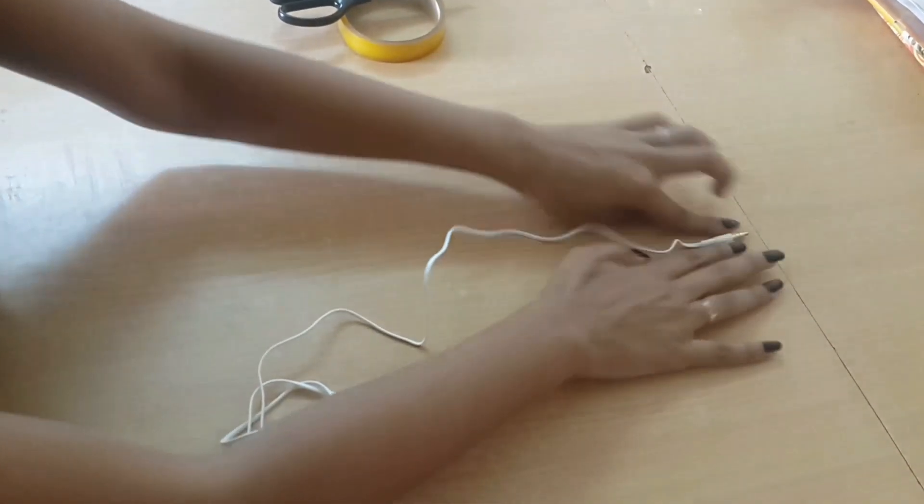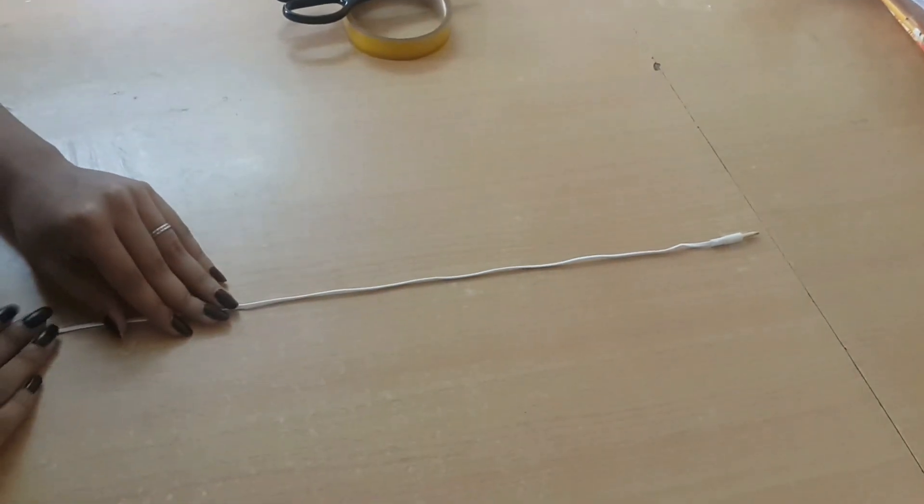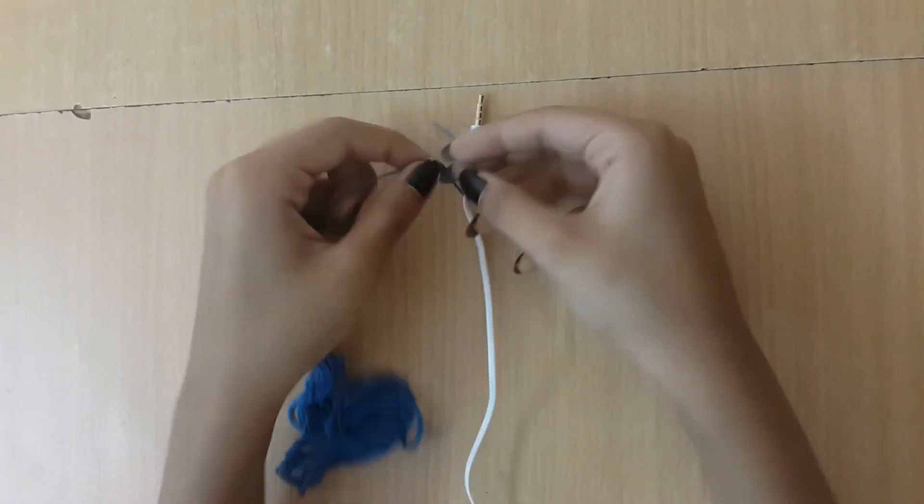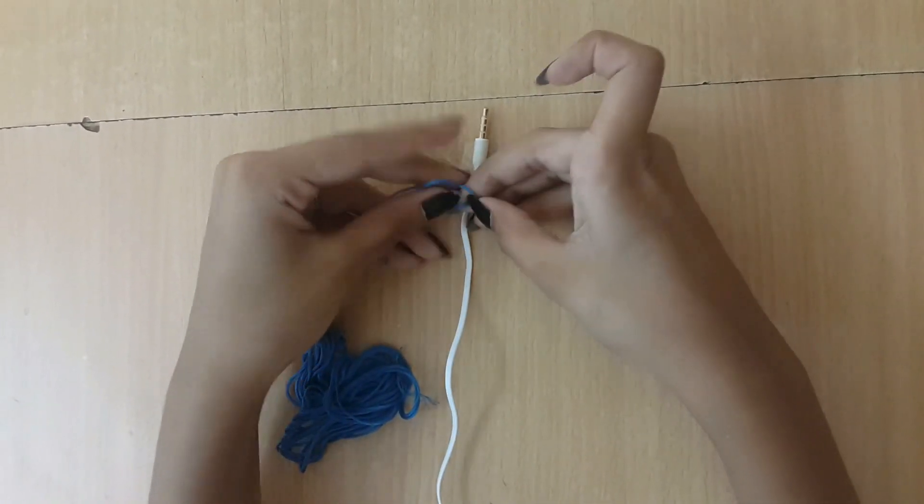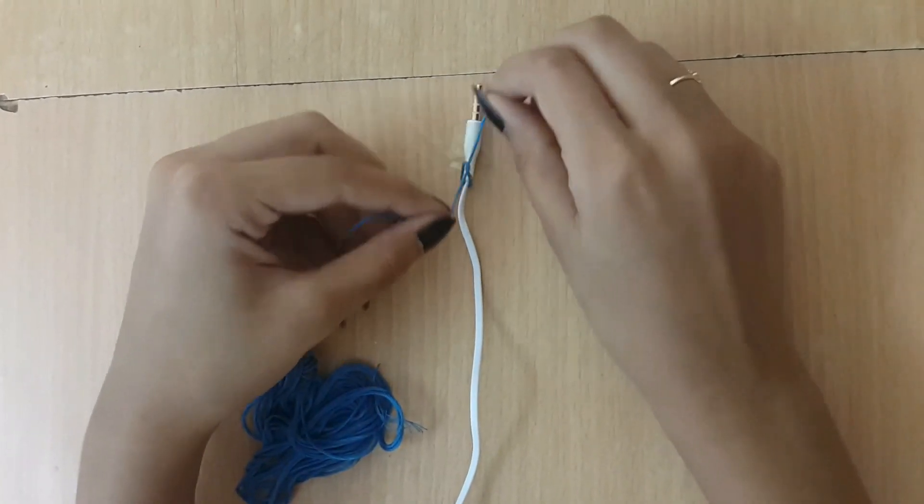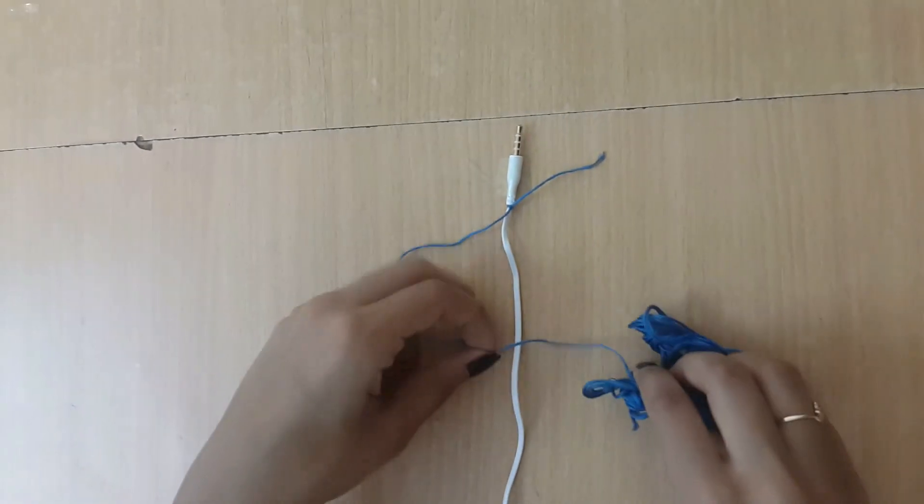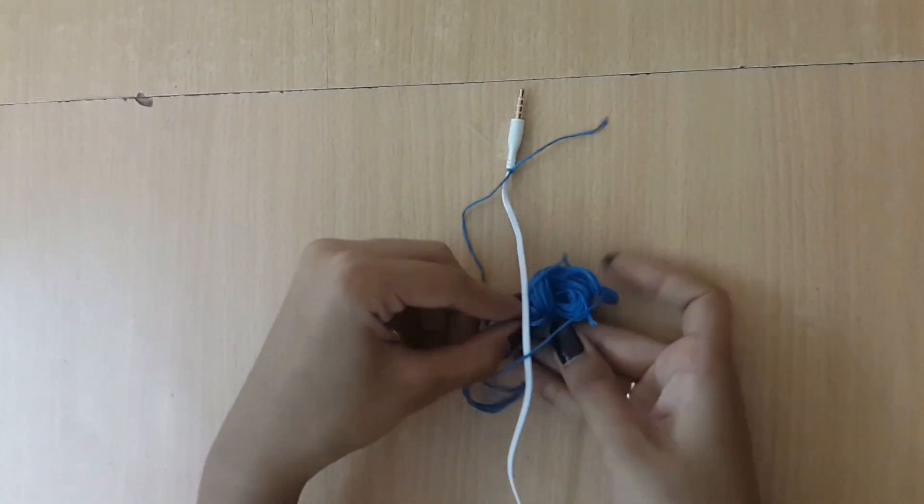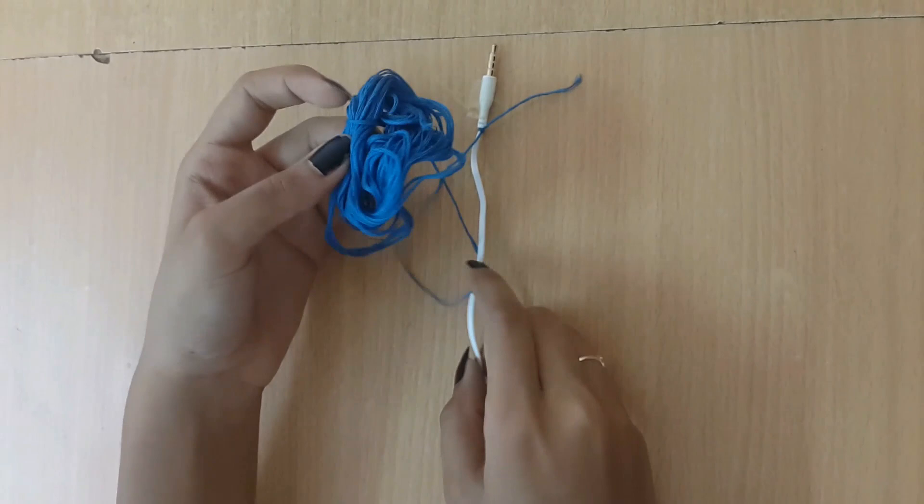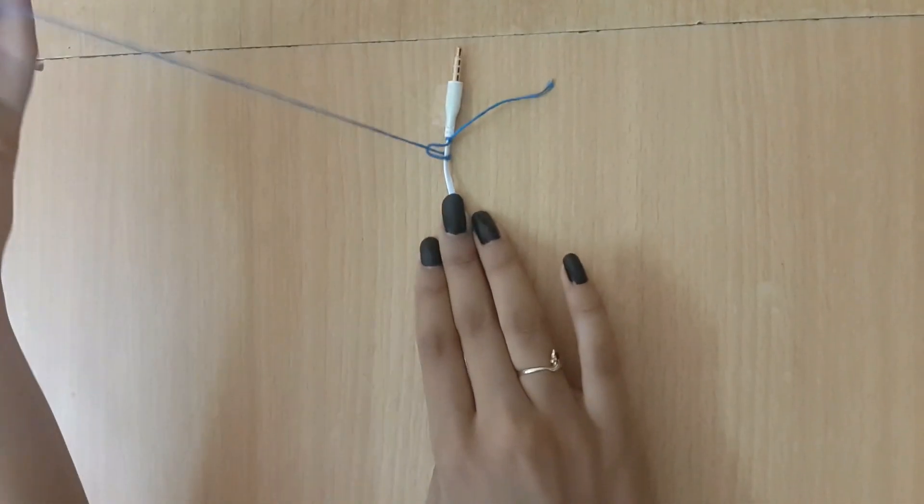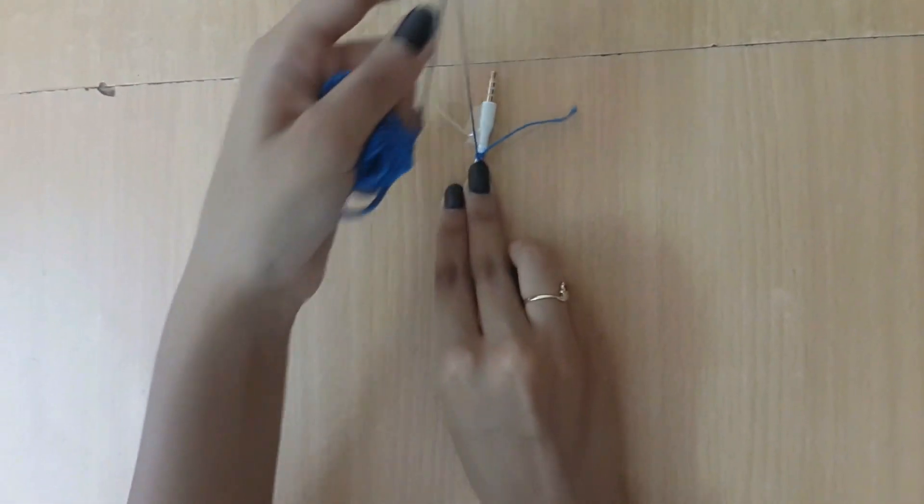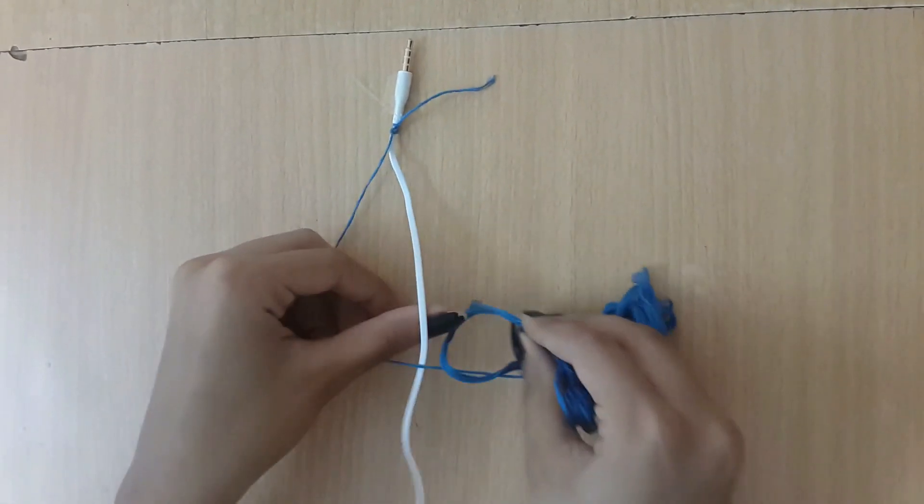It will be easier for you to work. Now the first step is you're gonna take the thread and knot it down. After that, make a D and pass the thread from under the headphones and tie a knot like that. Then you will keep repeating the step and also push the thread up so that there is no space left.